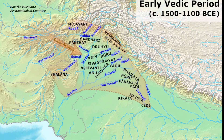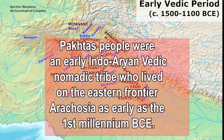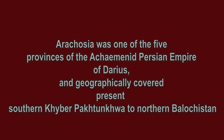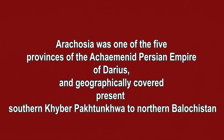One theory that gained attention from ancient days concerns the word Pakhtas, referred to in Sanskrit sources, and Paktians in Greek sources. These tribes were said to have been living across the eastern frontier of the Achaemenid Empire.